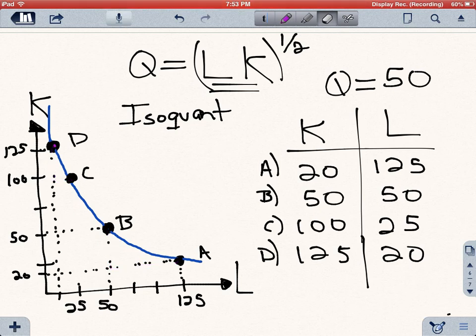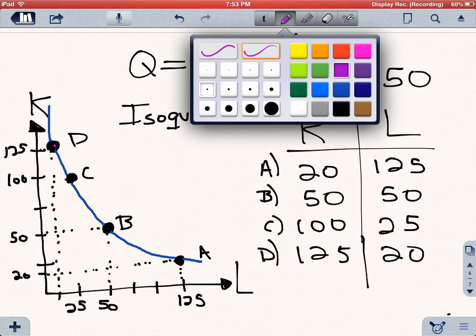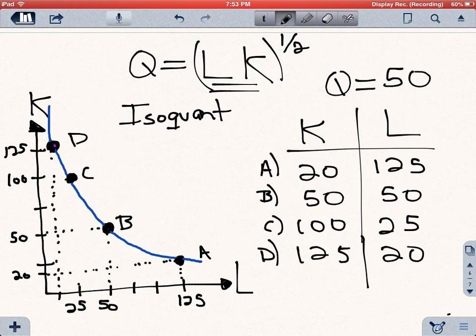So this is the curve we're going to be using in order to study production. Now, another thing you should notice is that all these combinations of labor and capital give you 50 units of output. That means the same way in which one utility curve has the same utility along the same curve, the isoquant will have the same unit of output along the same curve.